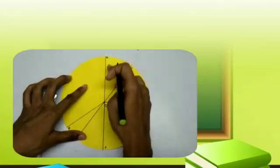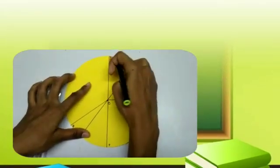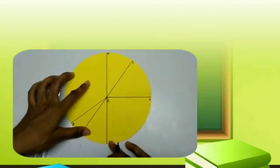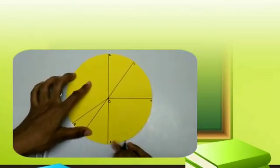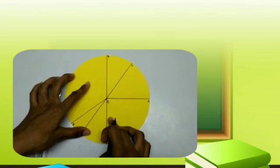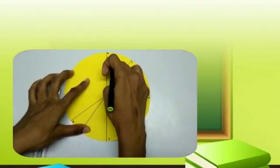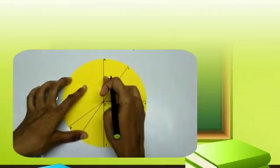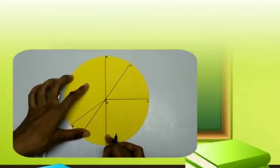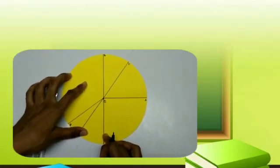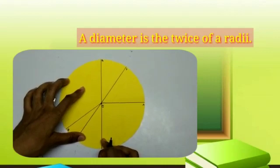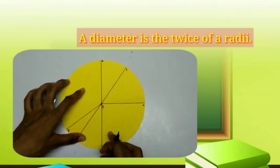We have got the diameter B and R. So, we can say that if PO is 3 cm and OR is 3 cm, so we will get a diameter of 6 cm. Therefore, diameter is always twice the radius.